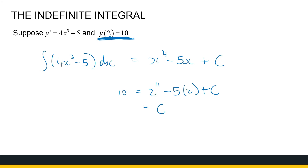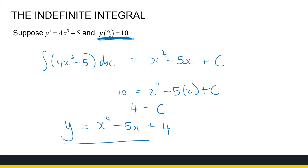We've got 2 to the power of 4, which is 16, minus 10 is 6, so c equals 4. Therefore the function is y = x⁴ minus 5x plus 4. In this case it's not a general plus c — we had enough information to determine that c equals 4. From here in this playlist, we're moving on to definite integrals. If you want to go straight to substitution, you can look at the first couple of videos on the integration techniques playlist.